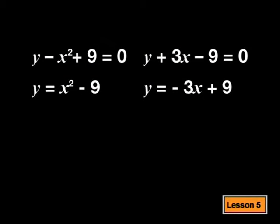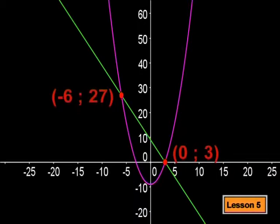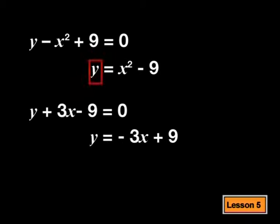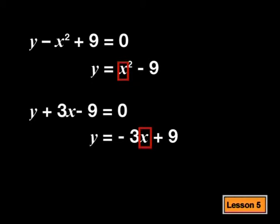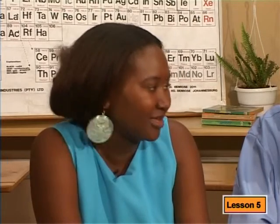Let's move on to solving equations algebraically. We'll use the same problem as before so that we can compare our answers. Let's have a look at the graph you just drew. Would you agree that at the points where the graphs intersect, the coordinates are the same on the straight line and on the parabola? In other words, this point lies on both of the graphs. Yes, I agree. So we could say with certainty that at the points of intersection, the values of x and y are the same. Which means that the y in this equation is the same as the y in this equation, and similarly the x in this equation is the same as the x in this equation. Which means if I substituted the y value of the linear equation for the y value of the quadratic equation, I would not be changing anything.